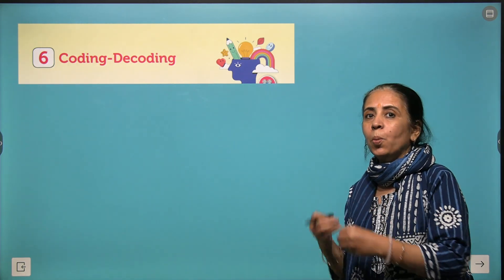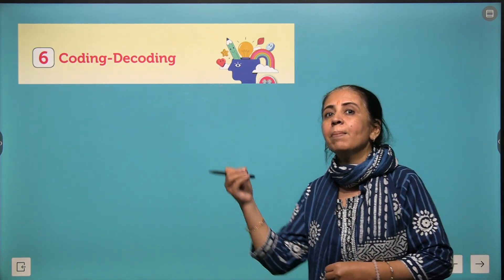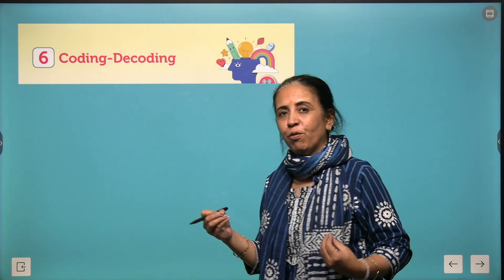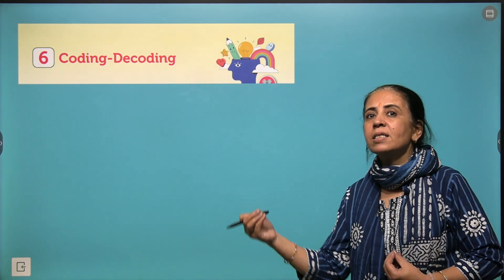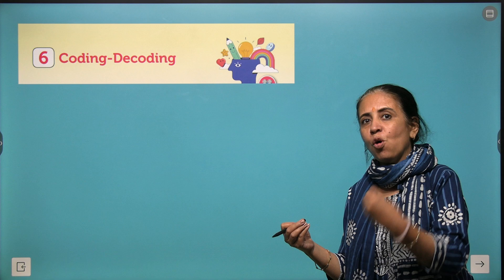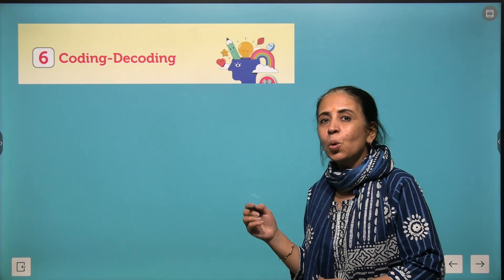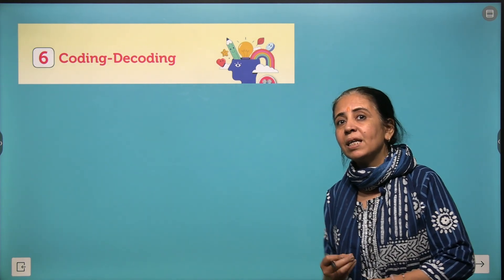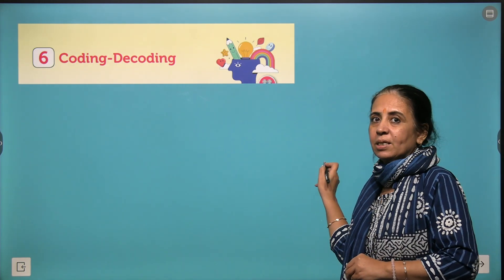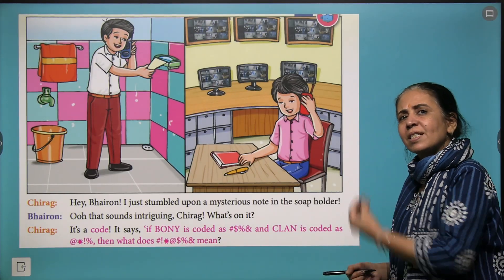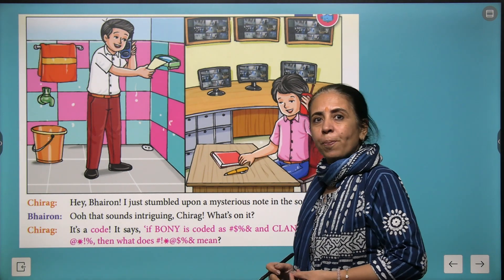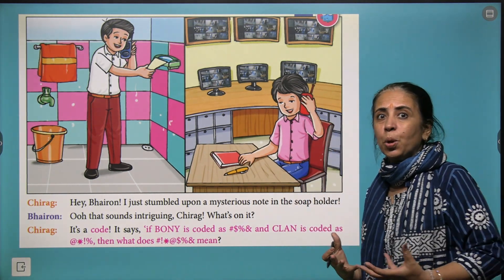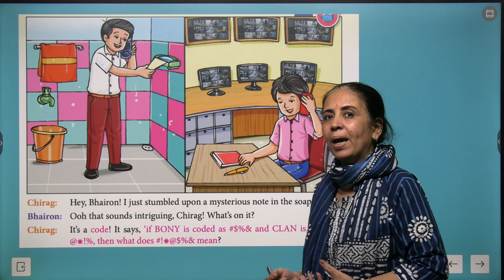When you want to convey some secret message to a friend, it is sending the message in the form of certain codes so that only the receiver is able to decode the message. Here, Chirag found a secret message near the soap case and he's not able to decode it. Bhairon is going to help him.